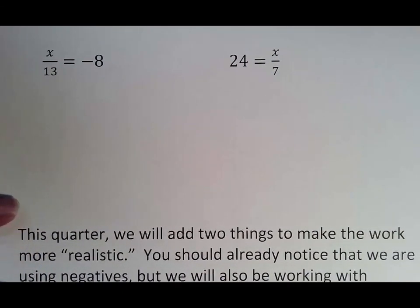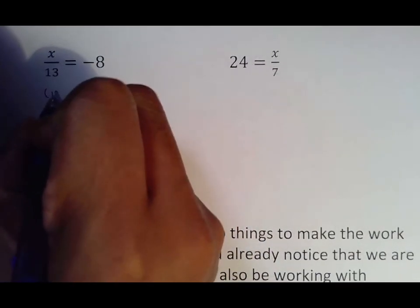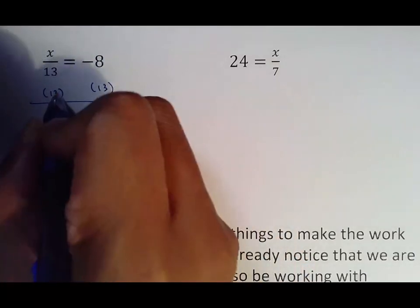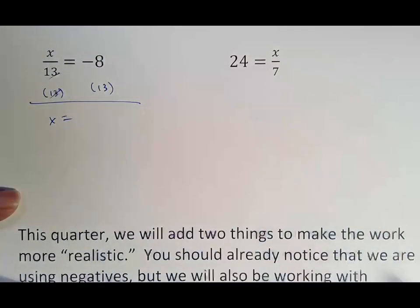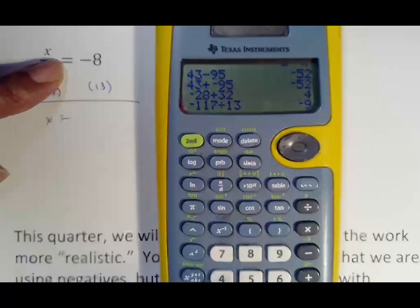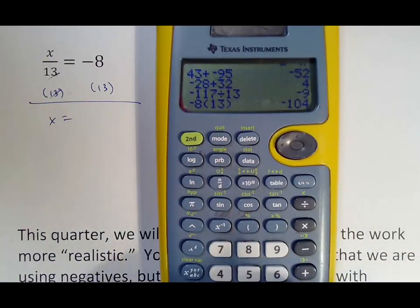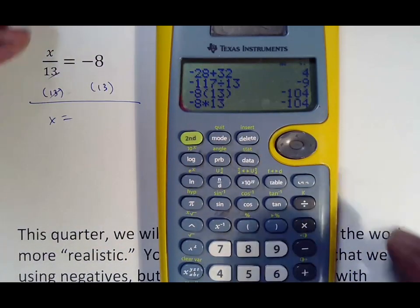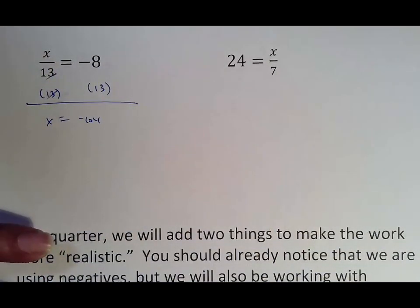But when you see X over 13 equals negative 8, that's X divided by 13, which means we move the 13 by multiplying by 13. The 13s cancel. X comes down. Negative 8 times 13. You can type what you see. Negative 8, parentheses 13, close. Or negative 8 times 13, however you want to do that, you still get the answer of negative 104, which is going to be your answer.